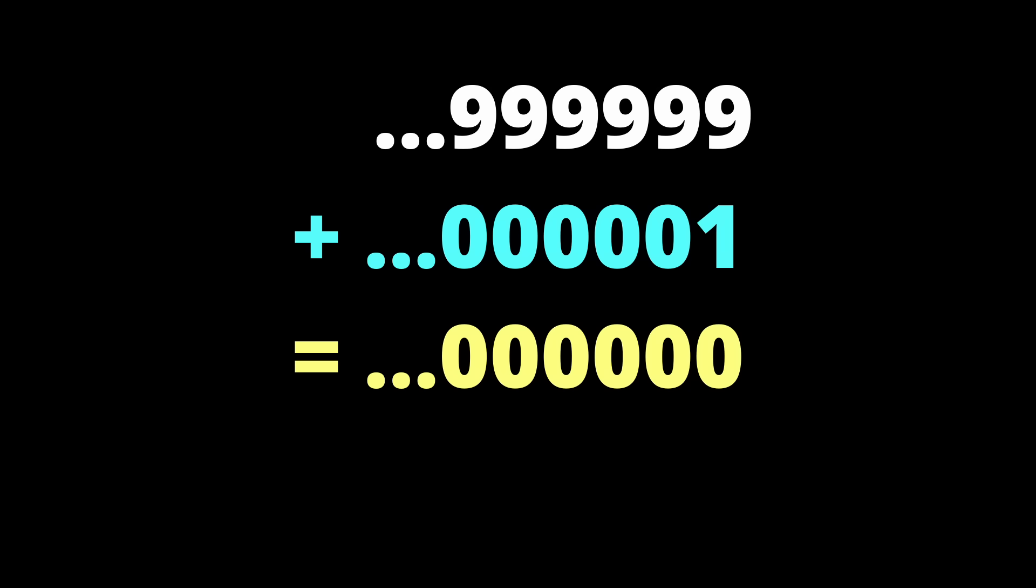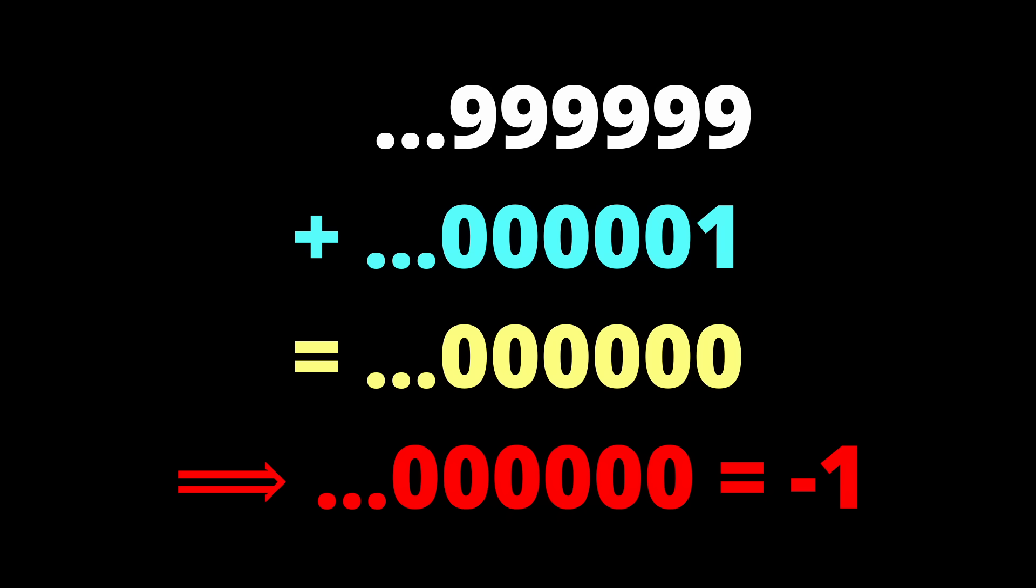This means that this infinite string of 9s to the left is actually minus 1. I'm not making this up. This is actually how it works. 9. Gabriel's horn.